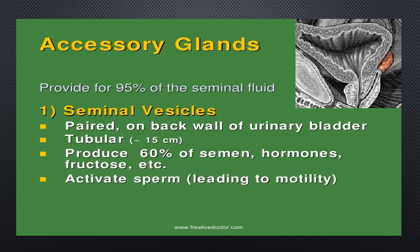The accessory glands provide about 95% of the seminal fluid. The seminal vesicles are paired glands on the back wall of the urinary bladder, approximately 15 cm in length. They produce about 60% of the semen, including hormones and fructose, and they activate sperm, leading to motility.